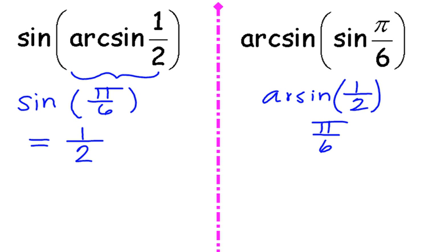Now that begs the question, can I just automatically cancel out sine and arcsin, or arcsin and sine, and I'm left with the same answer? The answer there is no. It doesn't always work that way. And you might ask, well, why not? Well, let's take a look at another example.